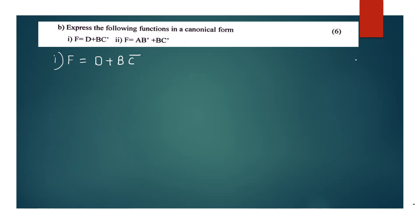Express the following functions in canonical form. The first one: f is equal to d plus bc complement. We have three variables. In the first term, b and c are missing. In the second term, d is missing.